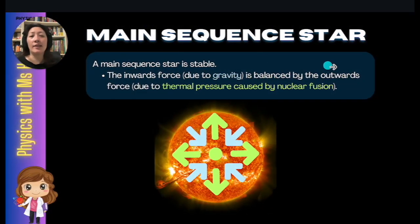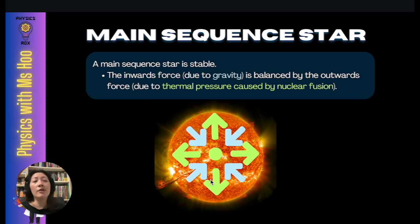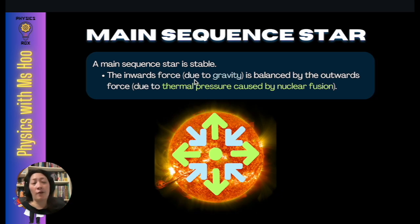The main sequence star is stable. The stability is due to the equilibrium of forces. There is an inwards force due to gravity, which exists because of the mass of the star. There is also an outwards force due to the thermal pressure caused by nuclear fusion. When the inwards force is balanced by the outwards force, this produces a force equilibrium, causing the star to be stable during the main sequence stage.